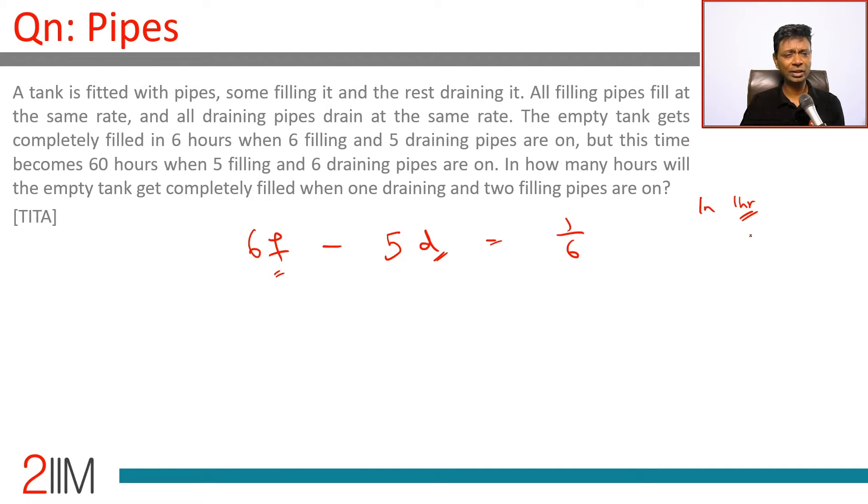Why 1/6? Because it fills completely in 6 hours, or in one hour it will fill 1/6. f is what is getting filled in one hour, d is what is getting drained in one hour. But this time becomes 60 hours when 5 filling pipes and 6 drain pipes are on, equal to 1/60.